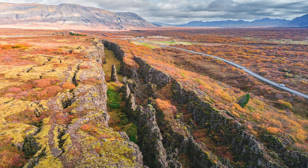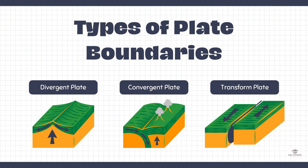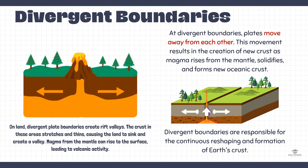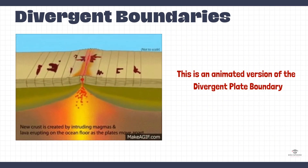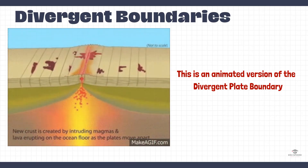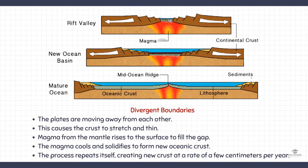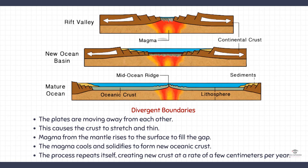The areas where these plates meet are known as plate boundaries. There are three types of plate boundaries: divergent, convergent, and transform. A divergent plate boundary is a place where two tectonic plates are moving away from each other. This causes the crust to stretch and thin, and magma from the mantle rises to the surface to fill the gap. This process is called seafloor spreading, and it is how new oceanic crust is created. Divergent plate boundaries are typically found in the middle of the ocean, where the plates are moving apart at a rate of a few centimeters per year.